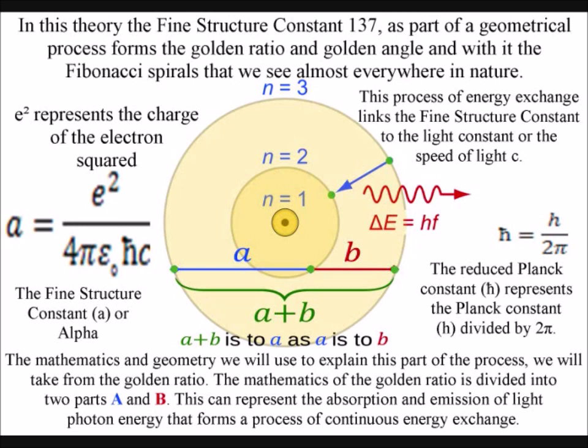The mathematics of the golden ratio is divided into two parts, A and B. This can represent the absorption and emission of light, photon energy, that forms a process of continuous energy exchange.